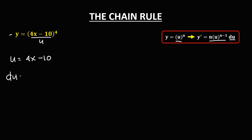To find the derivative of u: the derivative of 4x — we just drop the x — gives us 4. The derivative of the constant -10 is 0. So the derivative of u is equal to 4.